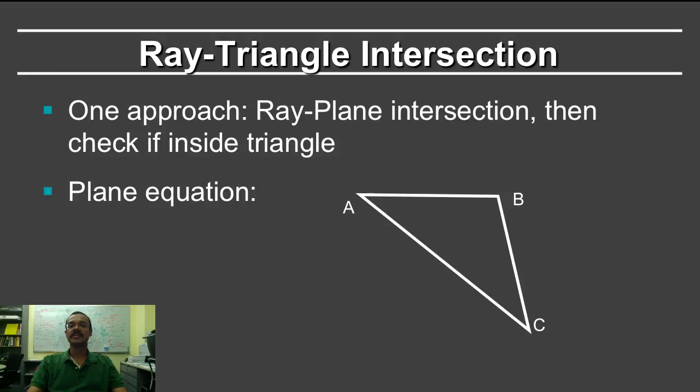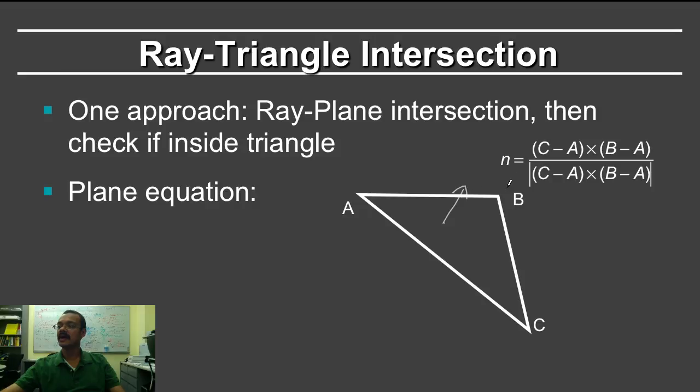The next thing you need to implement is ray-triangle intersection. There are of course many ways of doing this. It's a topic that's seen a lot of research. One approach we'll consider here is to intersect the ray with the plane in which the triangle lies, then check if the intersection point is inside the triangle. So first we need the equation for a plane. And in order to find the equation for the plane, you first need the normal to the triangle.